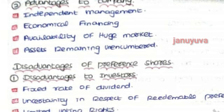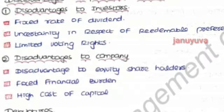Now the disadvantages. For investors, the first disadvantage is a fixed rate of dividend — the rate of dividend is standard and fixed, so there is no growth benefit. The other disadvantage is uncertainty in respect of redeemable preferences, meaning future-oriented repayment is uncertain. Also, preference shareholders have limited voting rights — voting rights apply only under some particular criteria and certain decision-making processes.